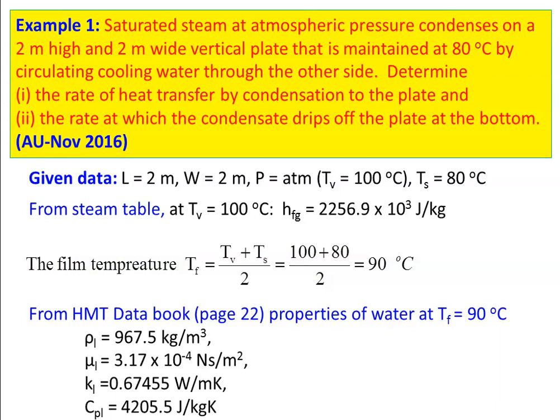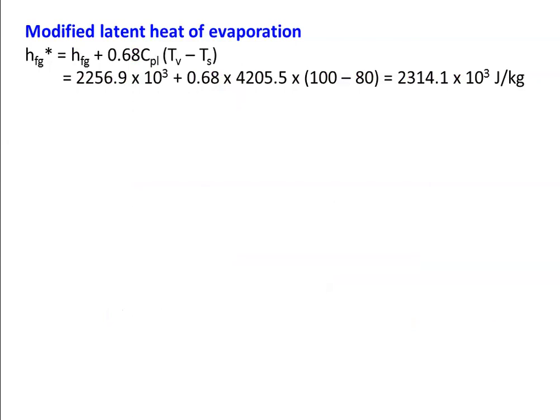For water, kinematic viscosity is given in the data book; multiply by density to get absolute viscosity. Thermal conductivity is 0.67455 W/m·K and specific heat of the liquid water is 4205.5 J/kg·K. Then we modify the latent heat of evaporation using the formula: HFG* = HFG + 0.68 × CPL × (Tv − Ts). Substituting all numerical values, HFG* equals 2314.1 × 10³ joules per kilogram.